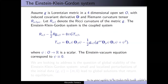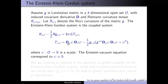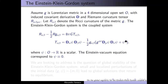We look at the Lorentzian metric in a four-dimensional open set with the induced covariant derivative, and the Riemann tensor. We let R alpha beta be the Ricci curvature. We have the Einstein field system, which links the Einstein tensor of the metric with the energy-momentum tensor in the spacetime. What makes this the Einstein Klein-Gordon system is that the energy-momentum tensor T alpha beta is given by just one scalar field — it's a Klein-Gordon scalar field.